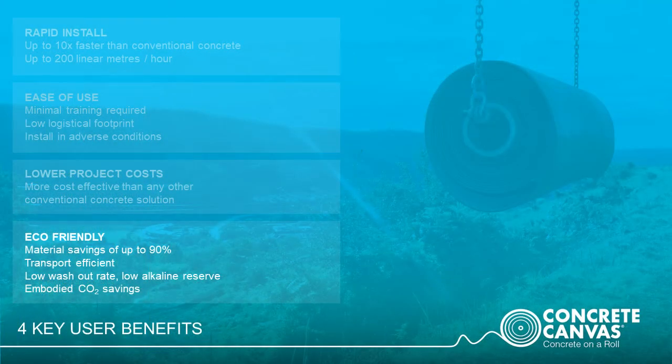The fourth key benefit of Concrete Canvas is its environmental friendliness. Reducing carbon footprint is now often a key performance criteria for major projects. CC offers a material saving of up to 90%, as CC8 is generally replacing reinforced poured concrete to a depth of 150 mm. CC has a very low washout rate and a very low alkaline reserve, meaning you can generally safely discharge runoff from CC installations into live watercourses without adversely affecting the local pH levels. Regulators recognise Concrete Canvas as a more eco-sensitive solution to conventional concrete, for projects where soft engineering approaches such as vegetation mats are not suitable.